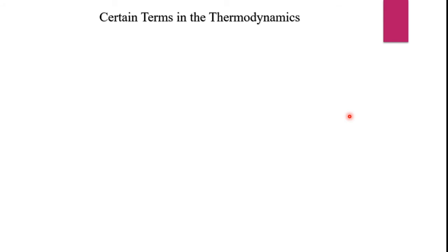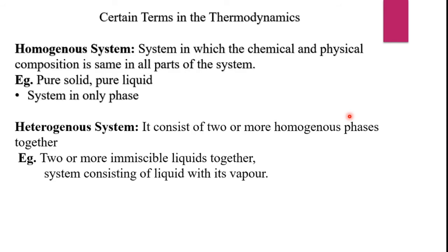Now we are going to see some basic terms used in thermodynamics, such as homogeneous system and heterogeneous system. A homogeneous system is a system in which the chemical and physical composition is the same in all parts of the system. The example is a pure solid or pure liquid — a system in only one phase can also be said to be a homogeneous system. A heterogeneous system consists of two or more homogeneous phases together. The example is two or more immiscible liquids together, or a system consisting of a liquid with its vapor.